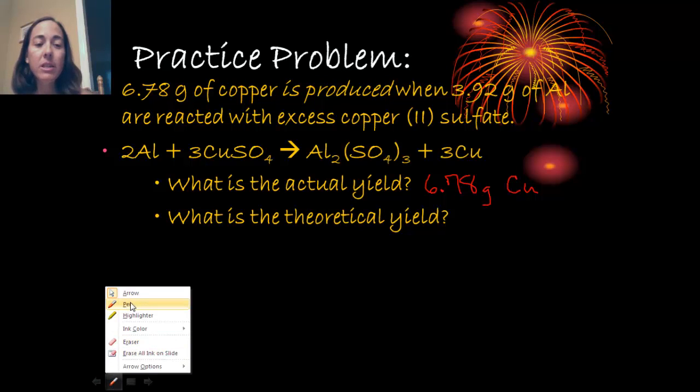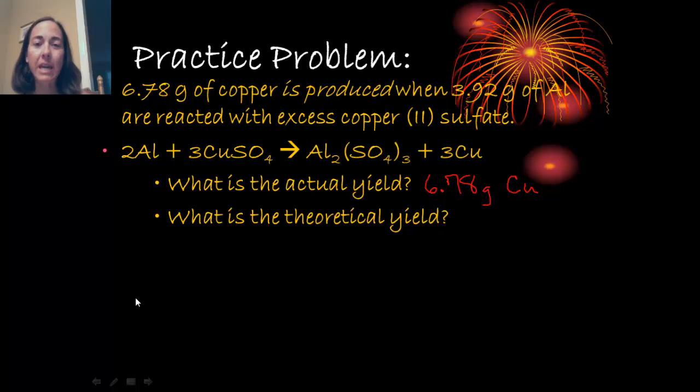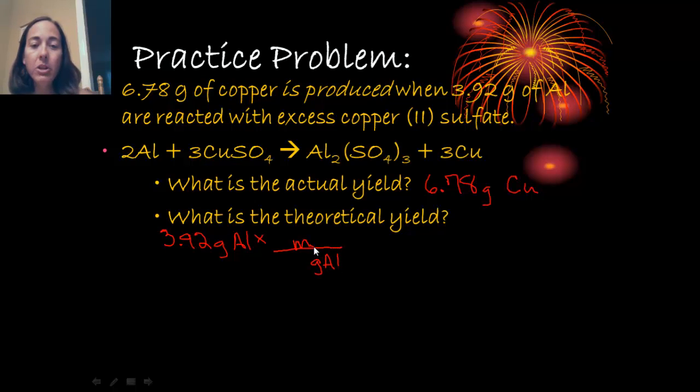If that's the actual yield, let's figure out what's the theoretical yield. Theoretical yield is going to be how much copper should we get? Well, I know that I'm starting with 3.92 grams of aluminum. This is going to be a stoichiometry problem. So remember the first step is to convert grams to moles. I know I need the grams of aluminum to cancel out, and I'm looking for moles of aluminum. I use a table. I know that aluminum has a mass of 27 grams. So one mole is 27 grams. That's going to cancel the grams of aluminum.